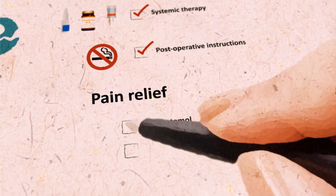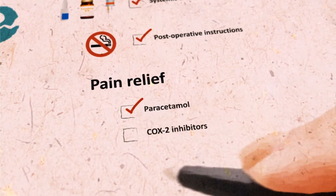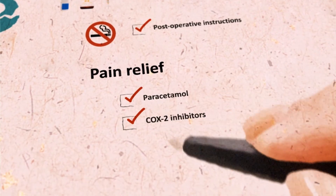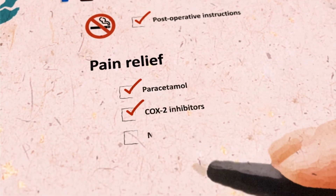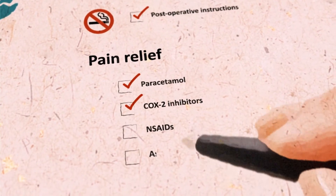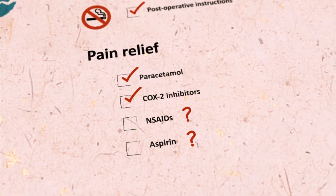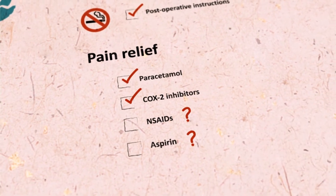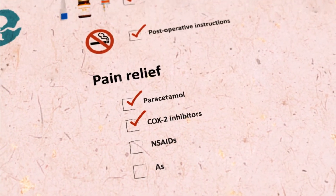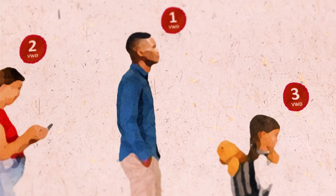Paracetamol and COX-2 inhibitors can be used for pain relief. NSAIDs and aspirin are relatively contraindicated in patients with von Willebrand disease.